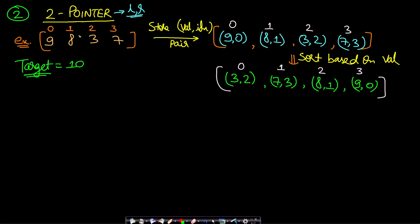To preserve indices, we construct a new array of (value, index) pairs. For the original array, 9 becomes (9,0), 8 becomes (8,1), 3 becomes (3,2), and 7 becomes (7,3). We then sort this new array by value, giving us a sorted array with correct original indices maintained.